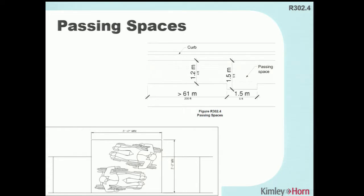Passing spaces are required so two wheelchairs can pass each other safely on the pedestrian access route without someone having to leave the sidewalk. It doesn't have to be a full five-by-five passing space — as shown in the figure, it can be just an extra foot added on.